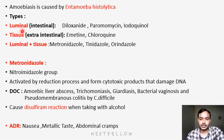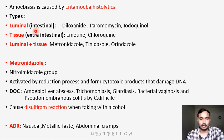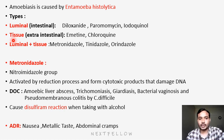Luminal amoebiasis is also called intestinal amoebiasis — it will be only in the intestine. Tissue amoebiasis means extra-intestinal, that means whether it is in the liver or other tissue. If it is combined, obviously that is luminal plus tissue amoebiasis.